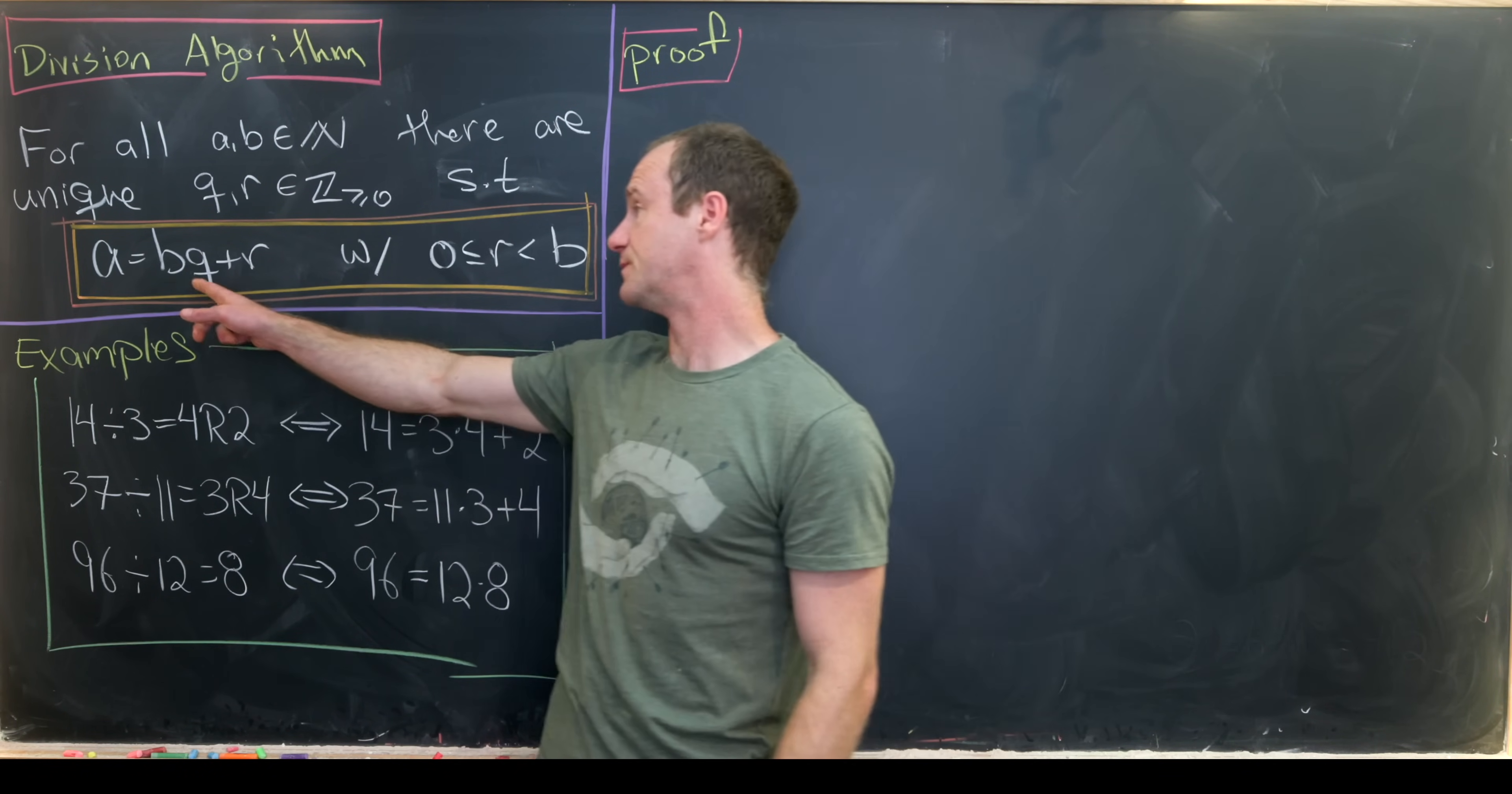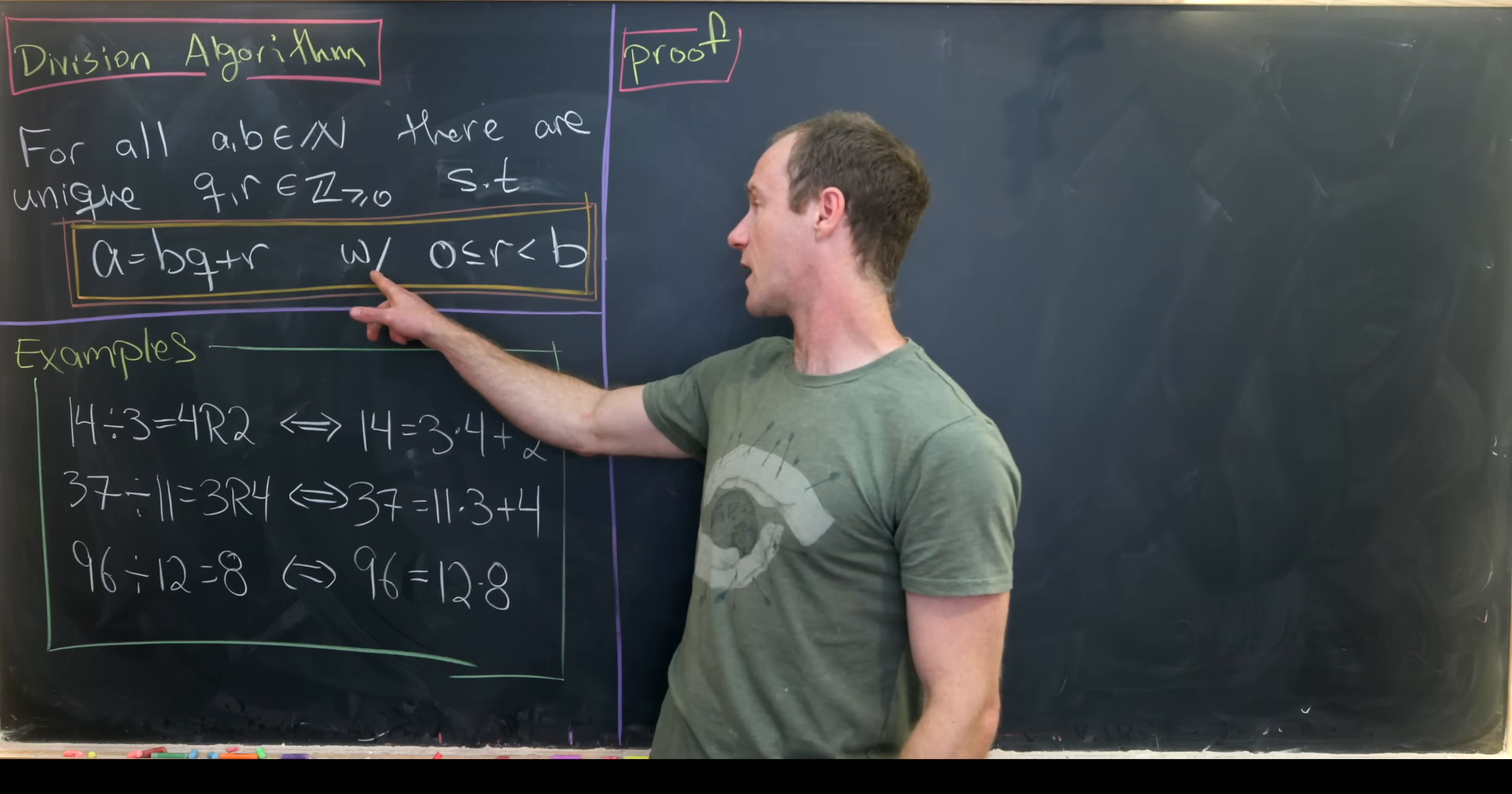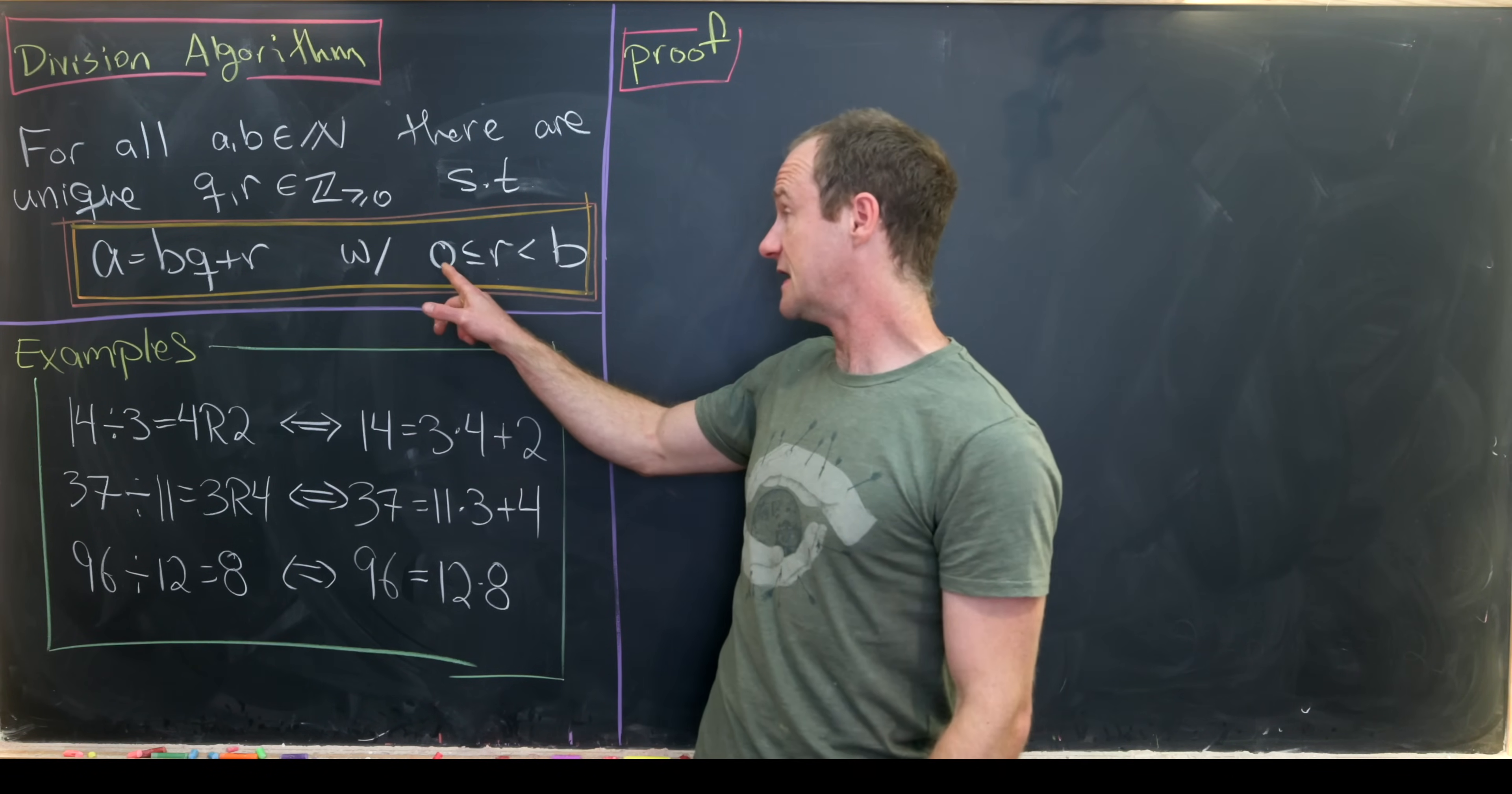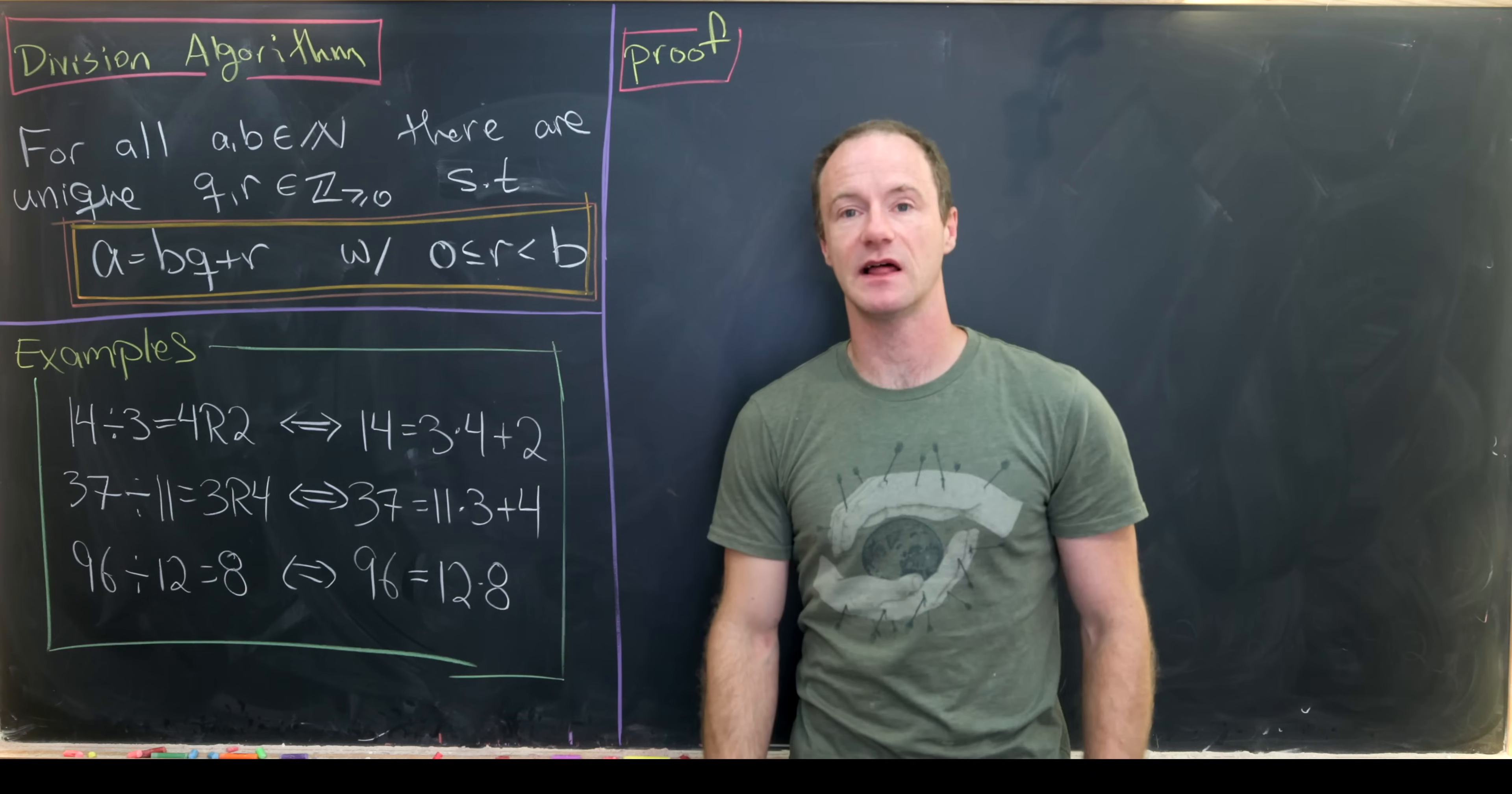We have a equals b times q plus r, where r is between 0 and b. It is allowed to be 0 but it is not allowed to be b.